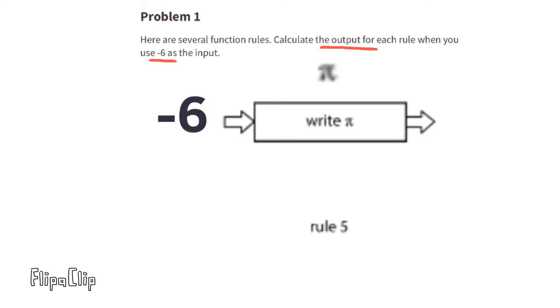The input is negative 6. The function is write pi. The output is pi. So when a negative 6 goes in, a pi comes out.